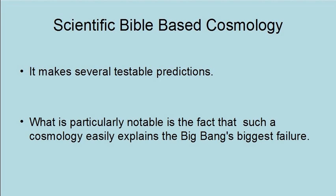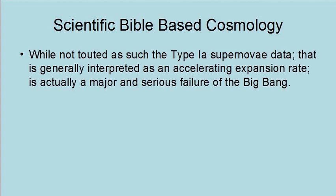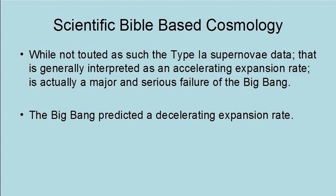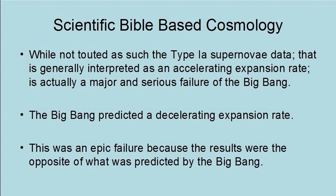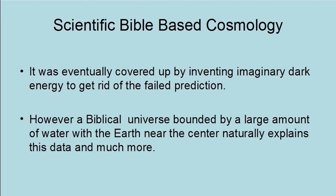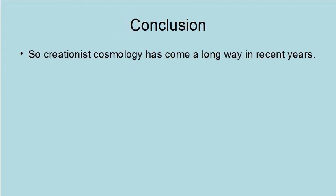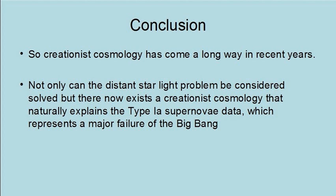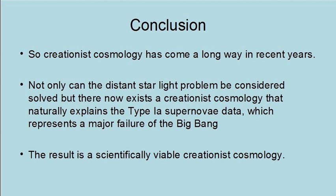This cosmology makes several testable predictions. What is particularly notable is that such a cosmology easily explains the Big Bang's biggest failure. The type 1a supernova data, generally interpreted as evidence of an accelerating expansion rate, is actually a major and serious failure of the Big Bang, which predicted a decelerating expansion rate. This was an epic failure because the results were the opposite of what was predicted. It was eventually covered up by inventing imaginary dark energy to account for the failed prediction. However, a biblical universe bounded by a large amount of water with the earth near the center naturally explains this data and much more. Creationist cosmology has come a long way in recent years — not only can the distant starlight problem be considered solved, but there now exists a creationist cosmology that naturally explains the type 1a supernova data, representing a major failure of the Big Bang. The result is a scientifically viable creationist cosmology.